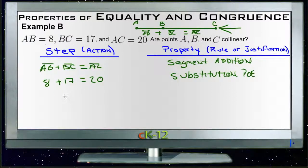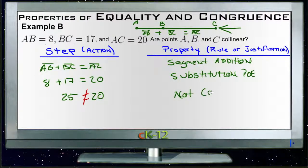And since 8 + 17 is 25, and 25 is definitely not equal to 20, then these two things are definitely not equal, and therefore not collinear. Okay.